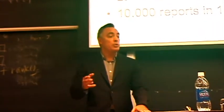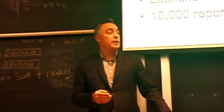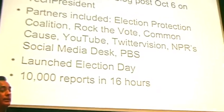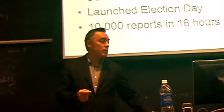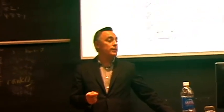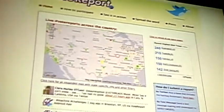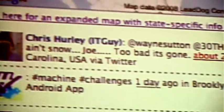We partnered up with the Election Protection Coalition, Rock the Vote, Common Cause, YouTube, Twitter, and other organizations. And we launched on Election Day, and in about 16 hours on Election Day, 10,000 reports were delivered. People were submitting their observations, and they were getting mapped in real time.